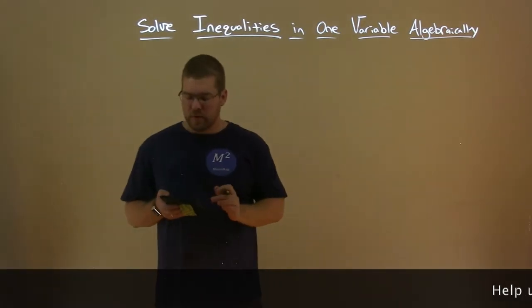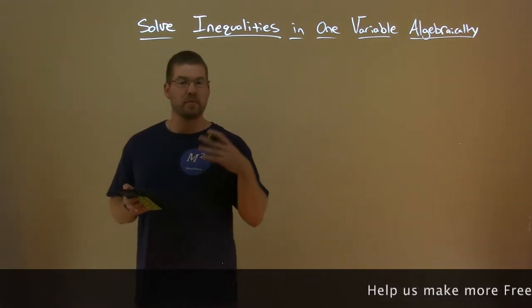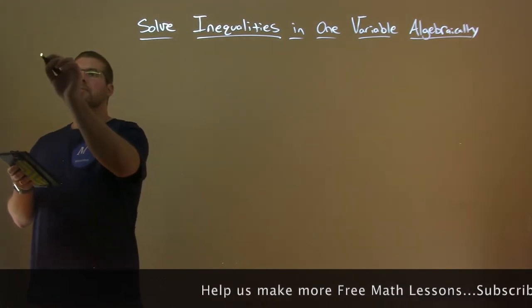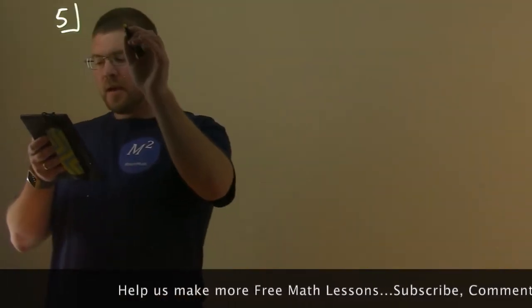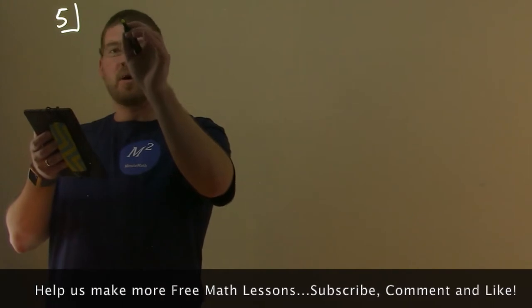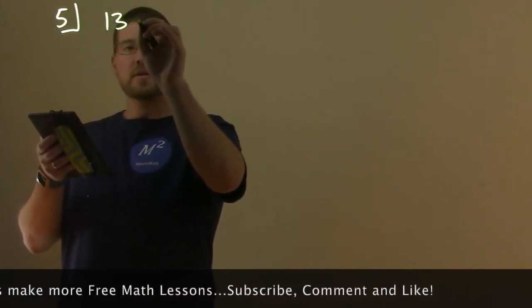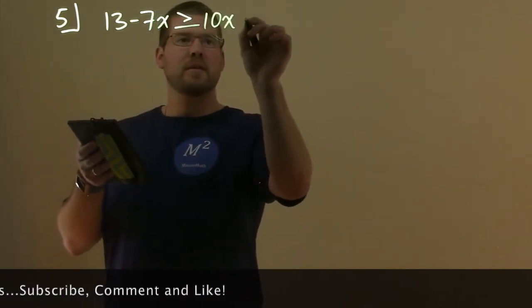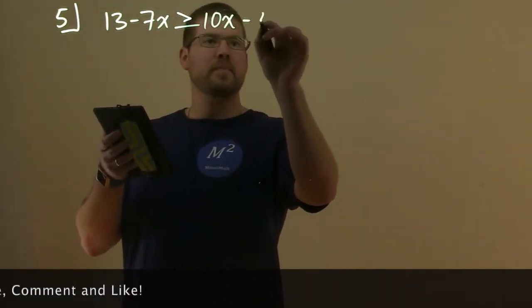So what we're going to do here is we're going to go through a lot of examples and practice this. So our first example here is example 5, and they want us to solve this inequality. 13 minus 7x is greater than or equal to 10x minus 4.